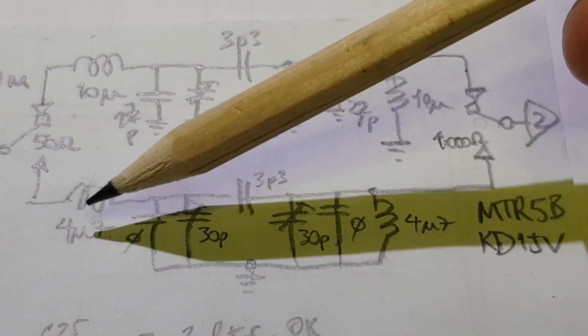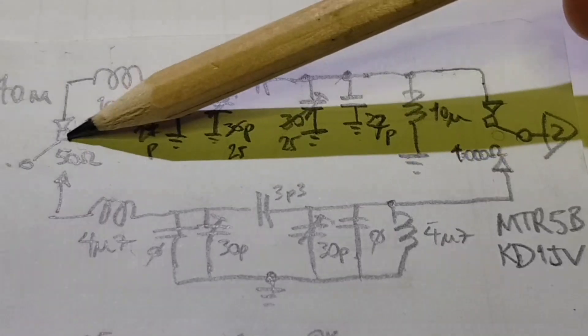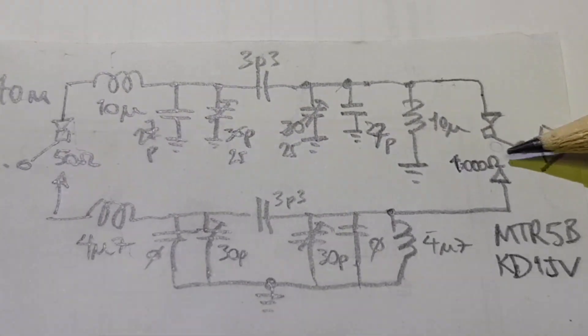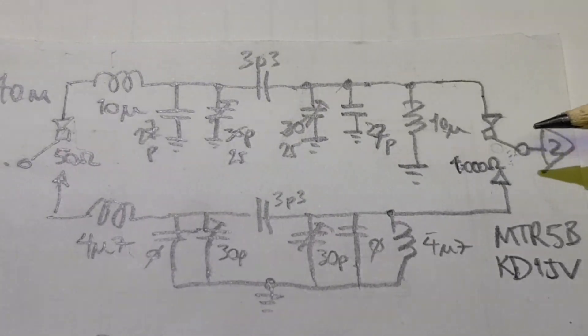The 20 meter ones are 4x7. So the impedance is going to be 50 ohms at the antenna end and about 1k at the receiver mixer end because the MTR-5B uses an SA612.